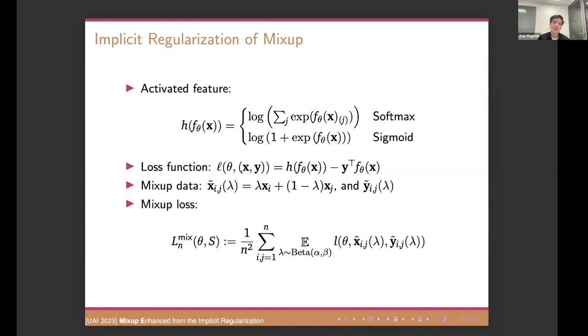As we can see from the figure D and figure E, the angle gap and the margin gap to the perfect hyperplane is decreasing, right? Okay. So to analyze the implicit bias of mixup instead of the gradient descent, we need to define the setting where we have the feature extractor as theta here. And we have the activation functions. There's two common activation functions, softmax and sigmoid. Then our loss function will be looked at this. The L is actually your loss function equals your active feature minus your ground truth. Okay.